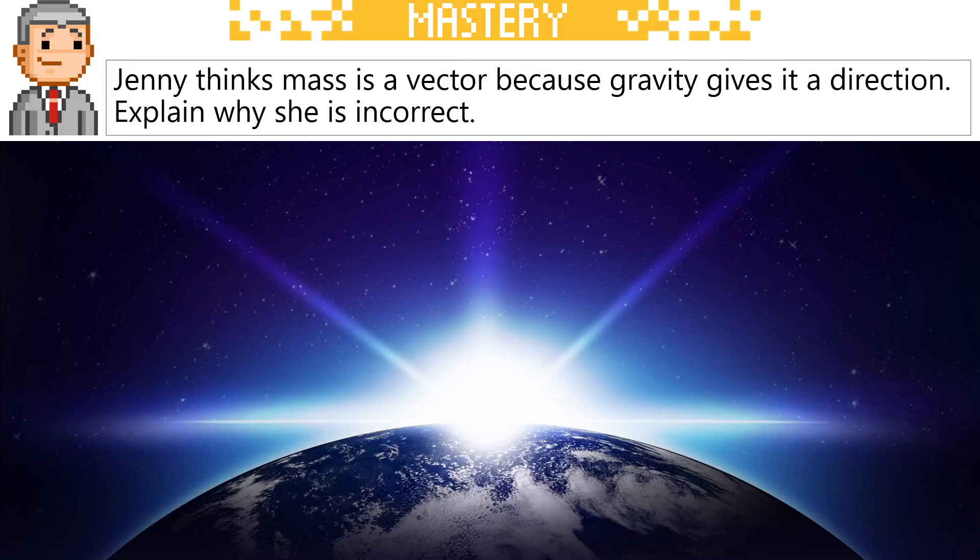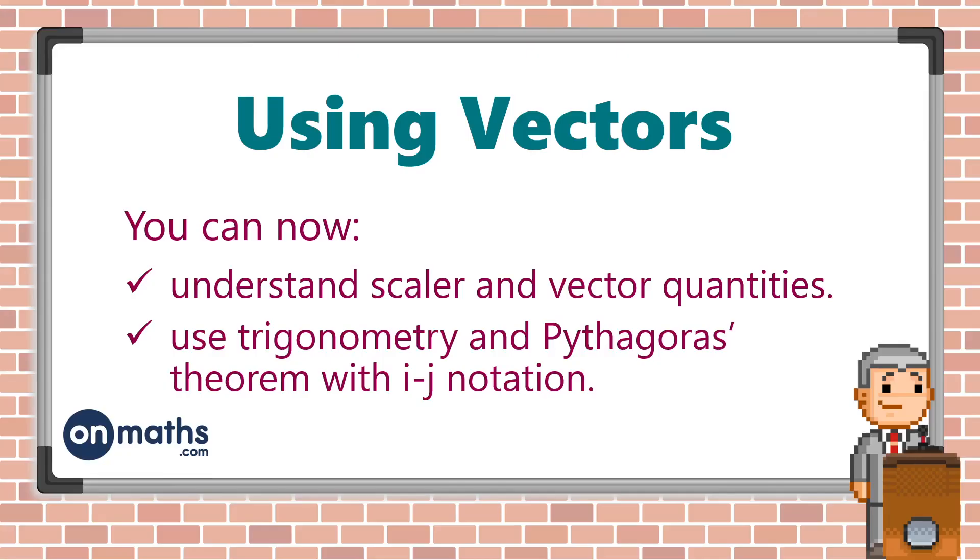Let's finish with this question. Jenny thinks mass is a vector because gravity gives it a direction. Explain why she is incorrect. If you know, write it in the comments below. And also come to onmaths.com or click the link in the description where you can access all of our A-level papers and predictions for free and you can even save your scores with a free account. This video is part of a larger A-level course you can follow along with at onmaths.com.